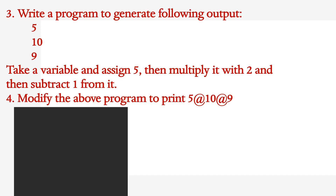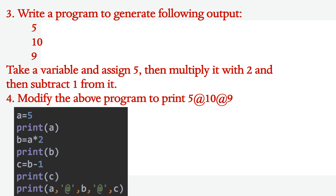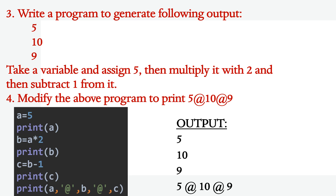Now modify the above program so that it will print 5@10@9. There is a variable A initialized with 5. It will print A. Then B is equal to A into 2, so B is stored and printed. Then C is equal to B minus 1 and printed. So A, B and C print in different lines. Then for the modified version, print A, then '@' in quotes, then B, then '@' in quotes, then C. The output will be: 5, then 10 (A times 2), then 9, all printed in a single line as 5@10@9.